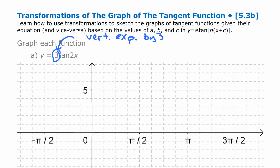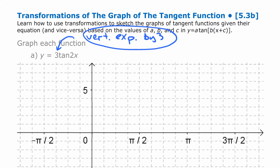The trouble with a tangent function is there isn't really a max or a min because it heads up to infinity and down to negative infinity, so it's hard to think about how that changes the graph. What we're going to do is track a few different points, expand those vertically by three, and that's going to be enough to get the shape right.